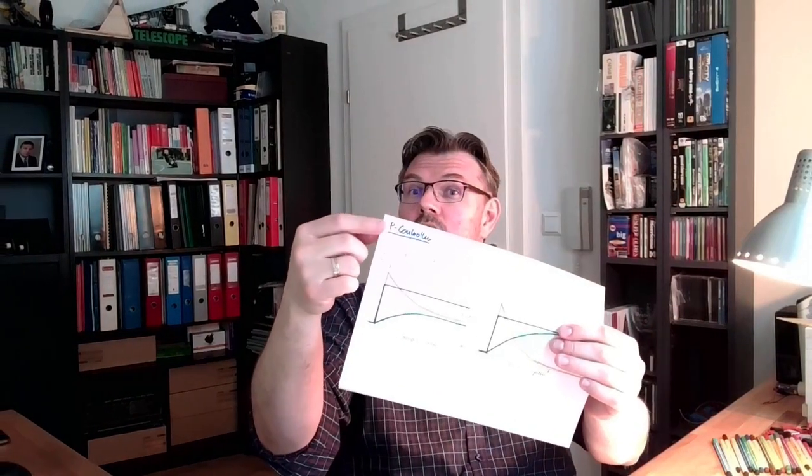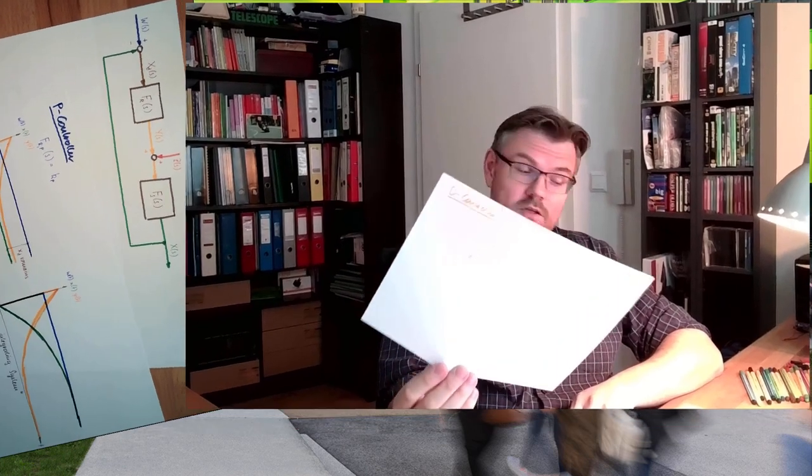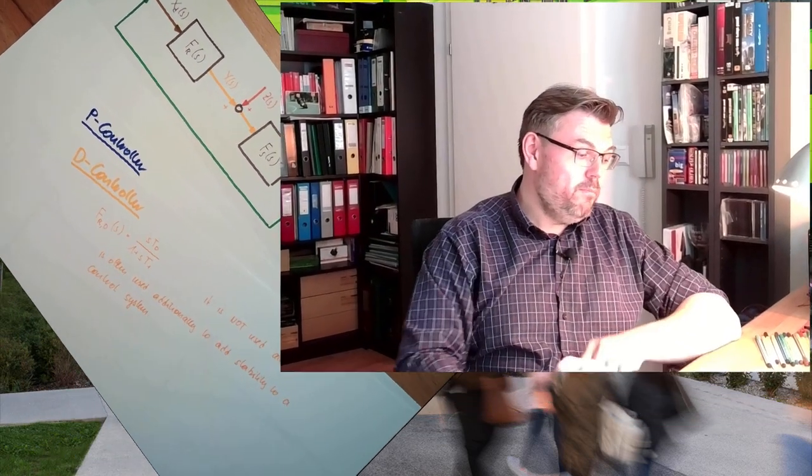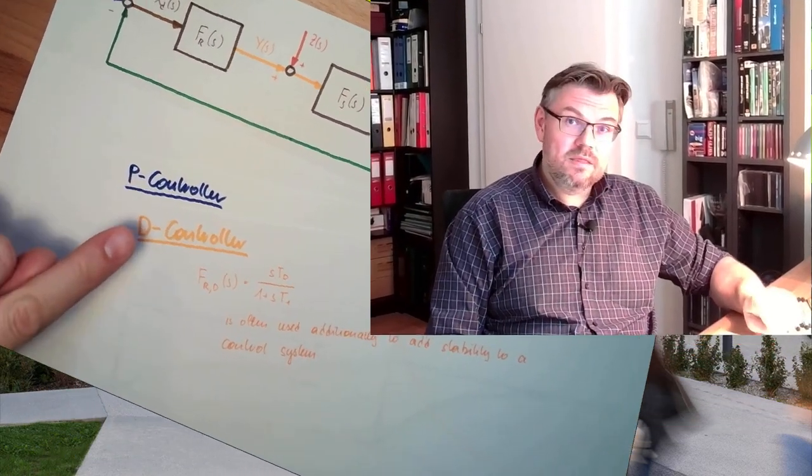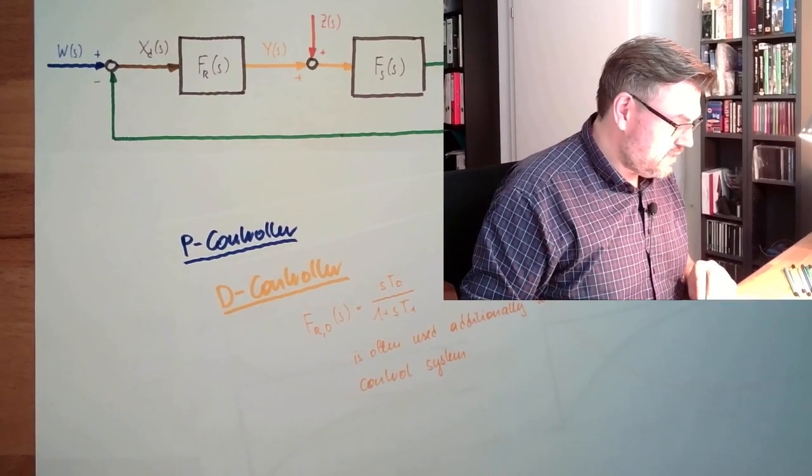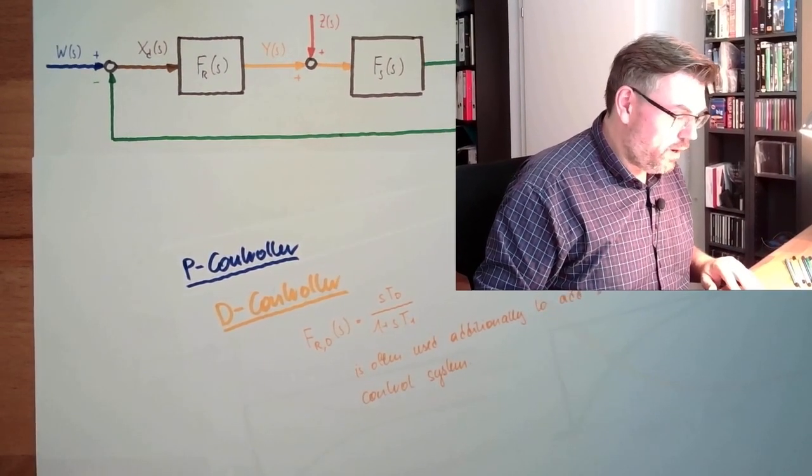This time we are going to combine a proportional controller, again a P-controller, and we are combining it with a D-controller, differential controller. So we are building a PD-controller. This is actually what we are going to do right now.